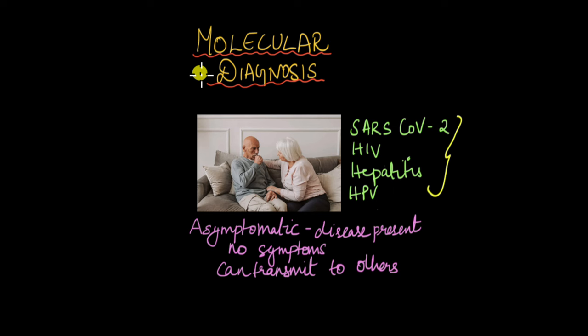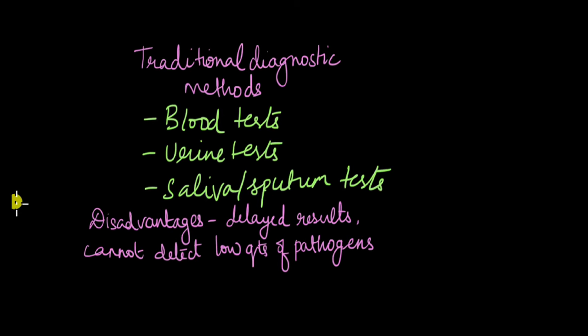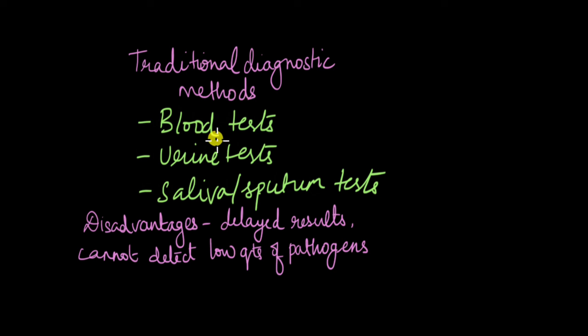Why rely on molecular diagnostic techniques instead of traditional methods like blood, urine, or saliva tests? Many asymptomatic people have very low quantities of pathogens in their blood that cannot be detected by traditional methods. They need a more precise, accurate, and sensitive method of detection. Additionally, traditional methods take a long time for results, by which time the patient may have worsened and treatment delayed. That's why doctors prefer molecular diagnostic techniques.